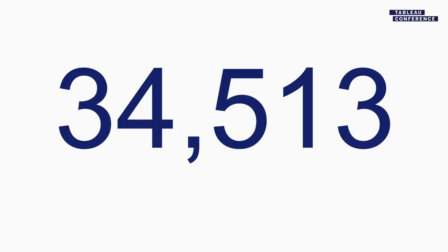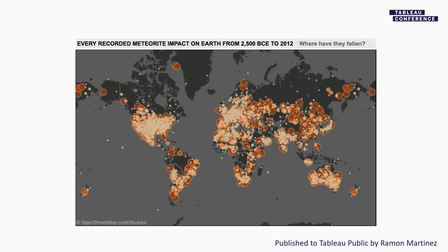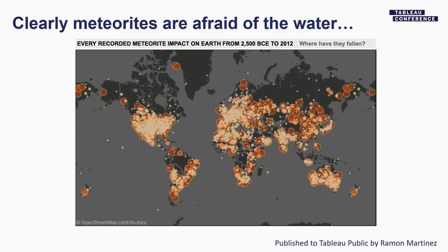This number got me thinking. The first question I wanted to know was where did they land — where were they noticed? Here's a visualization of every one of those 34,513 dots right there on the map, which tells us really clearly that meteorites are afraid of the water. They do not swim. Somehow magically they're landing only on inhabited areas and avoiding the Amazon and the tundra of North Russia.